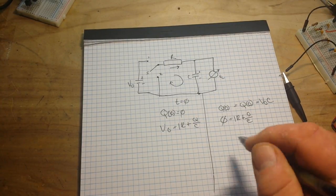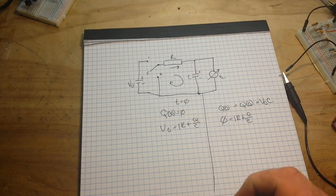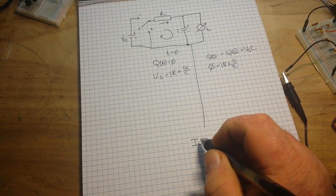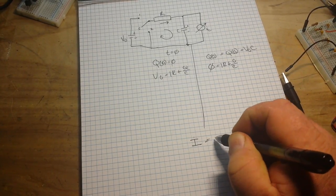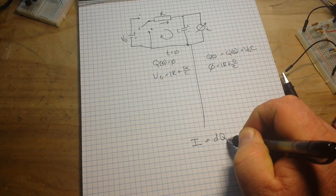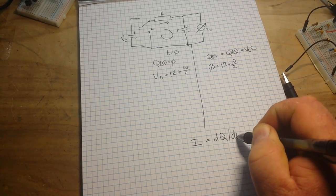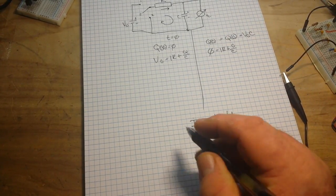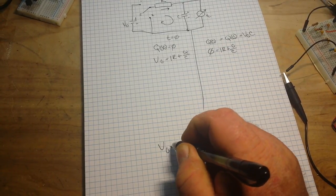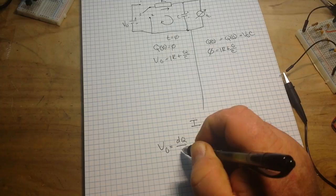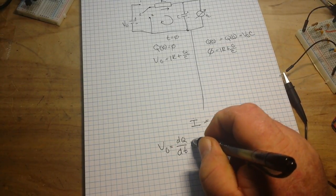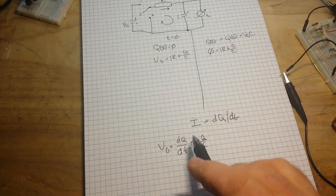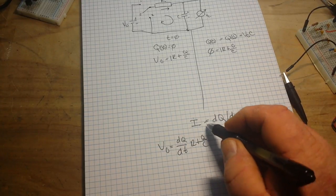And if we insert a relation that says that I equals DQ divided by DT. If we take this time-based equation, we can say that V0 is equal to DQ over DT times R plus Q over C. So all we're doing is we're taking the same equations and adding the time to the equation.